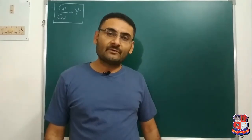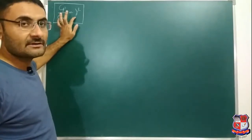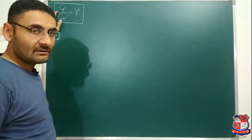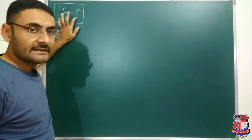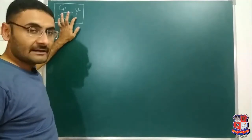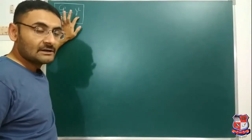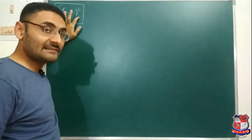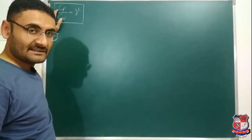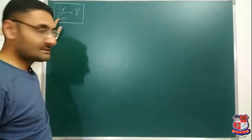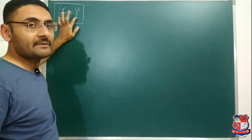Good morning, good afternoon, or good night — whenever you watch this video. Today we have one new topic: you have to prove that Cp/Cv equals gamma. Cp means specific heat at constant pressure, Cv means specific heat at constant volume, and gamma means the adiabatic index. When this type of question appears in your examination, which process comes to your mind? Since gamma is the adiabatic index, the adiabatic process should come to mind.